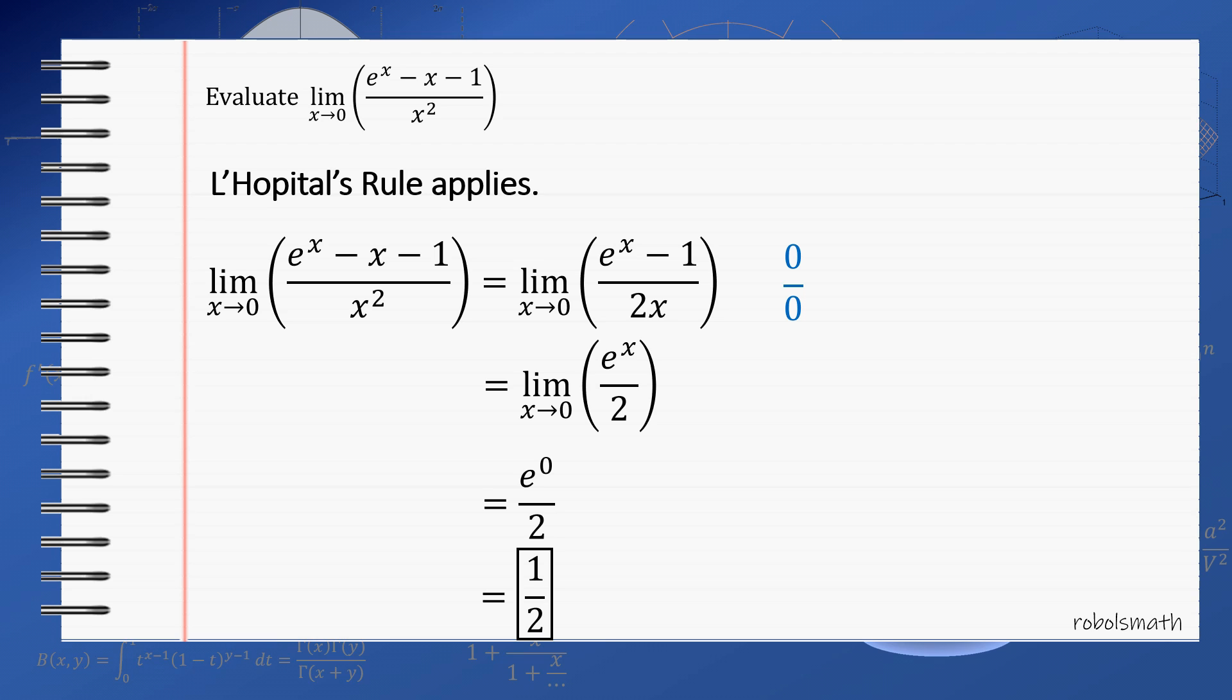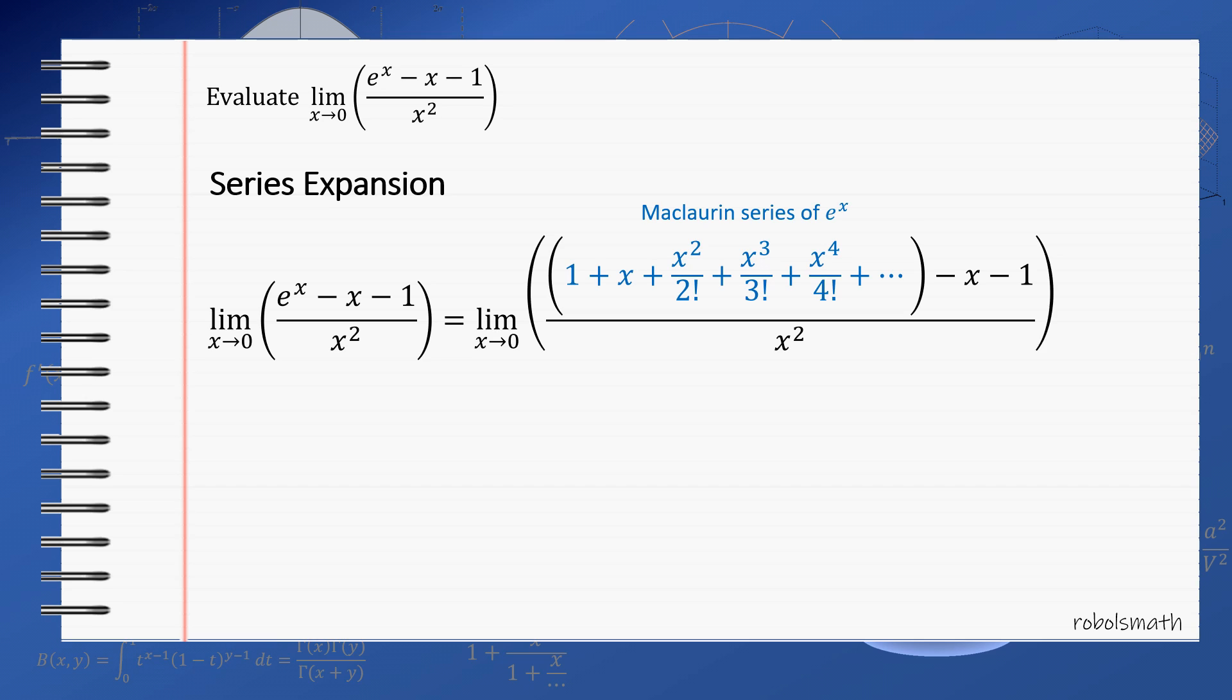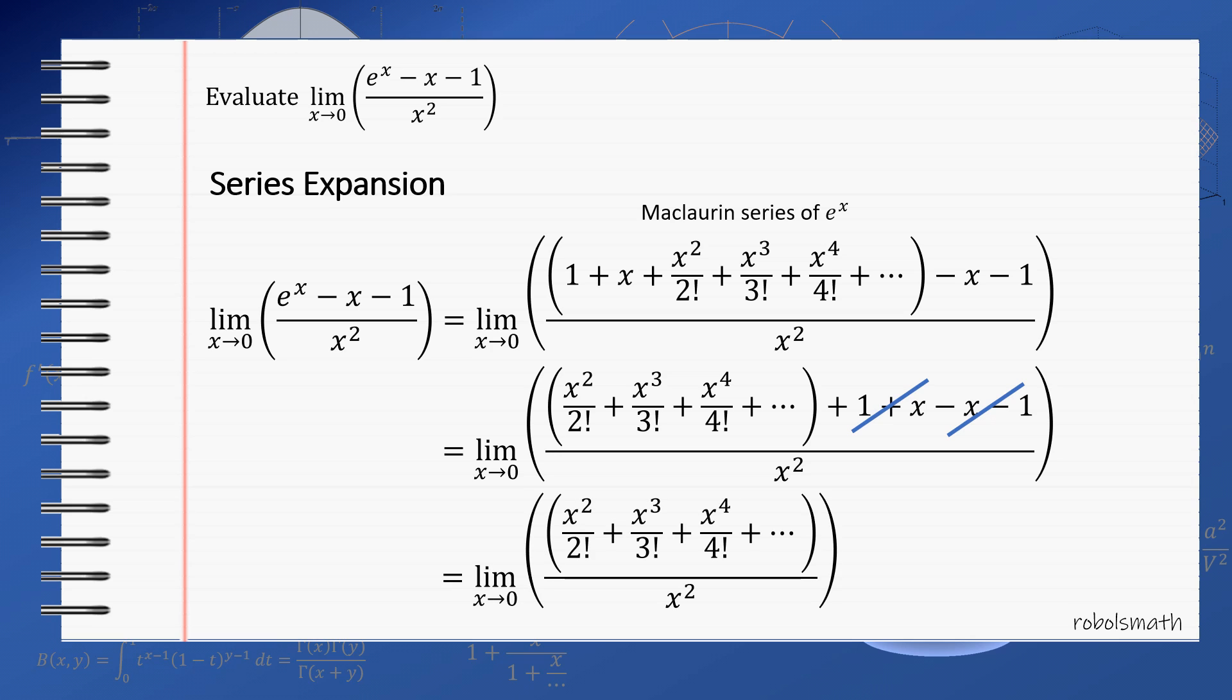Next we try to use series expansion. Quite popularly, the function e to the x is known to be equal to the infinite series 1 plus x plus x squared over 2 factorial plus x cubed over 3 factorial plus and so on. This is known as the Maclaurin series of e to the x. If we take out the x plus 1 from the series, the x plus 1 cancel out. This leaves only the terms x squared over 2 plus x cubed over 3 factorial and so on in the numerator. In the denominator, we still have x squared.